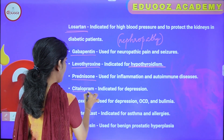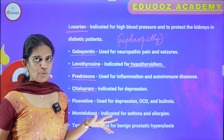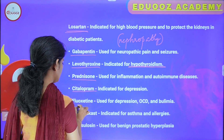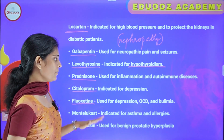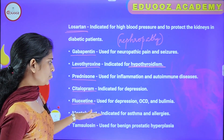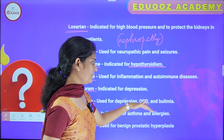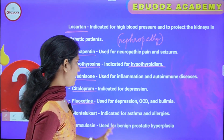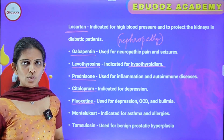Citalopram is an antidepressant drug indicated for depression. Fluoxetine is also an antidepressant drug — it is used for depression, obsessive-compulsive disorder, and bulimia. It is an antidepressant and treats CNS-type disorders.